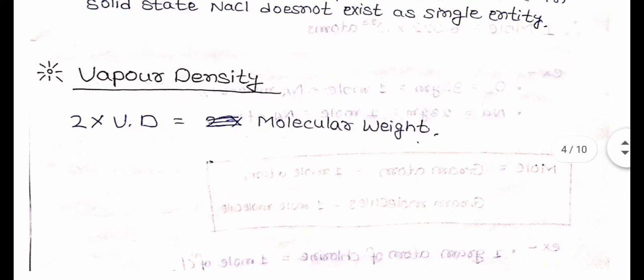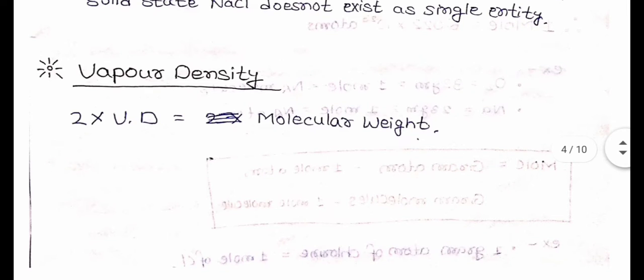Now, Vapor Density. The formula: Vapor Density = Molecular Weight / 2, or 2 × Vapor Density = Molecular Weight.